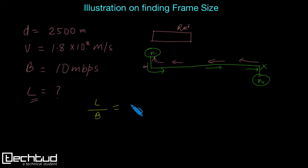And that should be equal to round trip time. So what is round trip time? Round trip time would be this distance D upon V, this velocity, into 2, right?